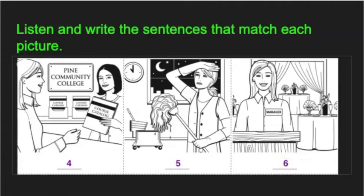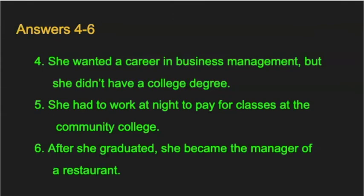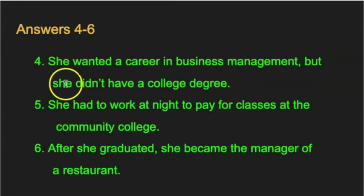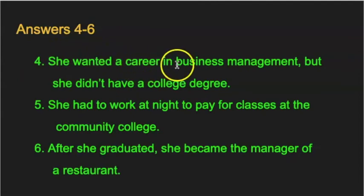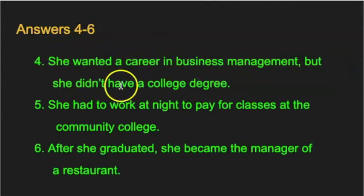And now we're going to go to the answers for sentences four through six. Sentence number four: she wanted a career in business management, but she didn't have a college degree. Again, she wanted a career in business management, but she didn't have a college degree.